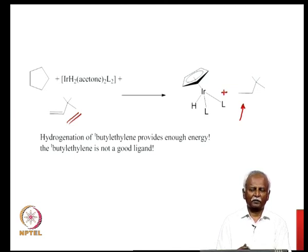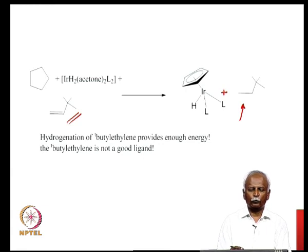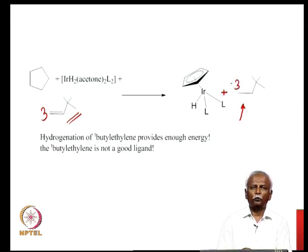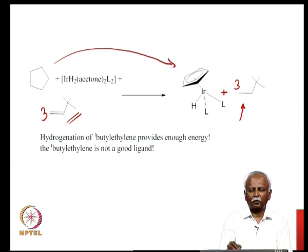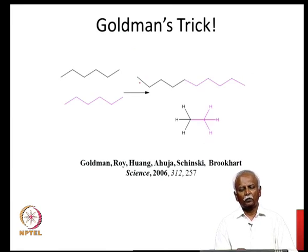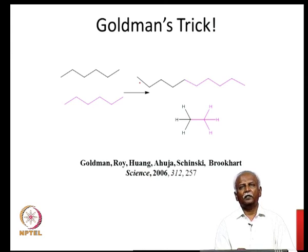A catalyst which is capable of carrying out activation of dihydrogen, hydrogenation and dehydrogenation is shown here. It is an iridium 3 plus catalyst and it carries out hydrogenation of tertiary butyl ethylene, which provides enough energy and pushes this reaction from left to right. In the particular example shown, you would need 3 equivalents of tertiary butyl ethylene to give you 3 equivalents of the saturated molecule, because several hydrogens have been removed from the cyclopentane, which has been converted into a cyclopentadienyl molecule present on the iridium.